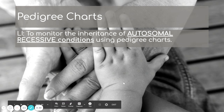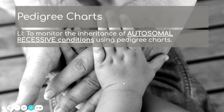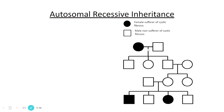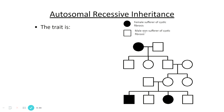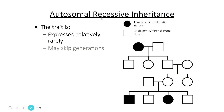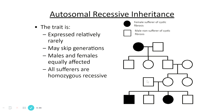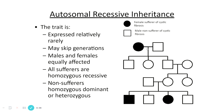Let's first look at the pattern of inheritance in an autosomal recessive condition, using cystic fibrosis as a typical pedigree example. The trait is expressed relatively rarely because it is recessive; it can skip generations. Males and females are equally affected, and all sufferers must have two copies of the recessive allele — they'll be homozygous recessive. Non-sufferers could be heterozygous or homozygous dominant.